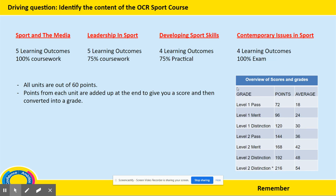Sport in the Media is essentially five different LOs, which are all written documents. Leadership in Sport is five LOs. Developing Sport Skills is four LOs, which also involves some practical, just like the Leadership in Sport unit. Contemporary Issues in Sport is split up into four different LOs, and today I'm just going to talk you through each of those LOs. I also want to highlight that all four units are out of 60 points, which are then added up and converted into a grade.